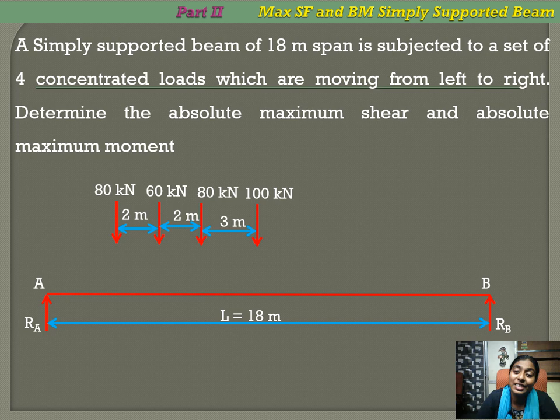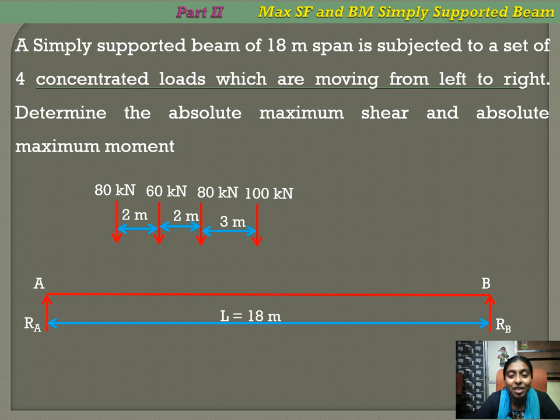This problem differs from previous ones. In previous problems, we determined maximum shear forces and bending moments at a given section. Here, no section is given — we are asked to find the absolute maximum shear force and absolute maximum bending moment.